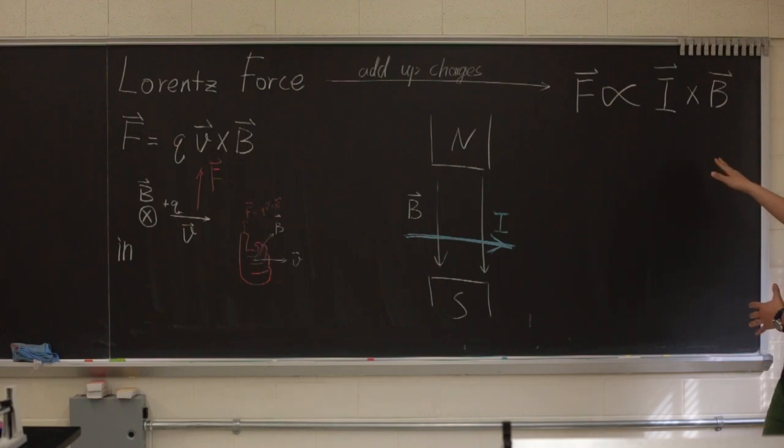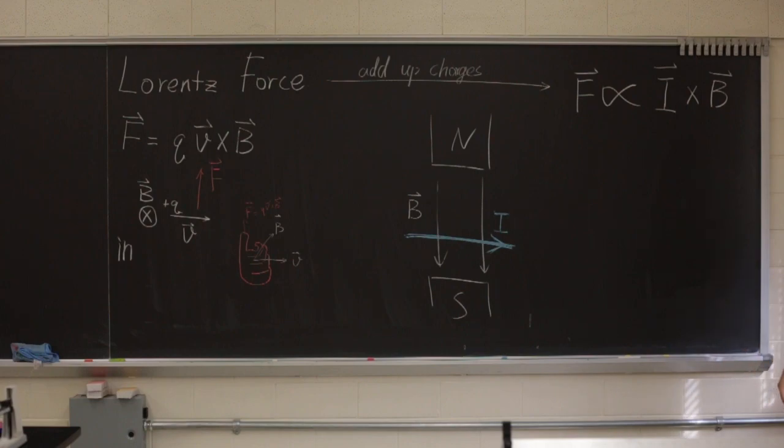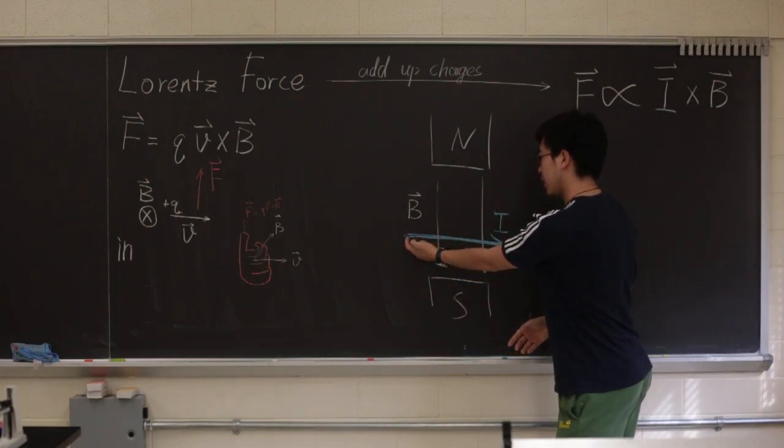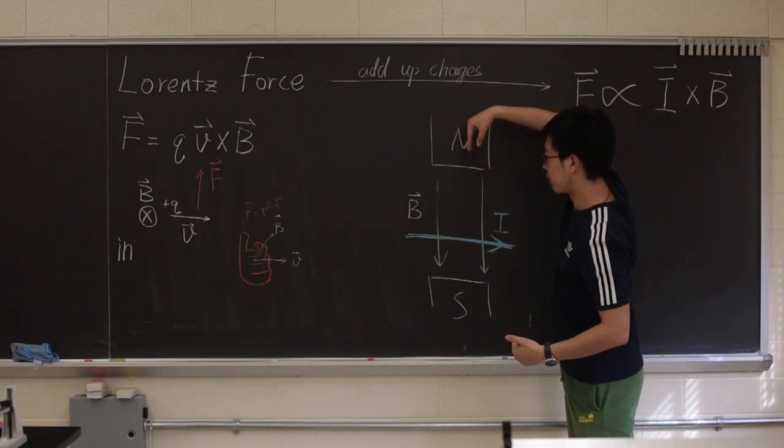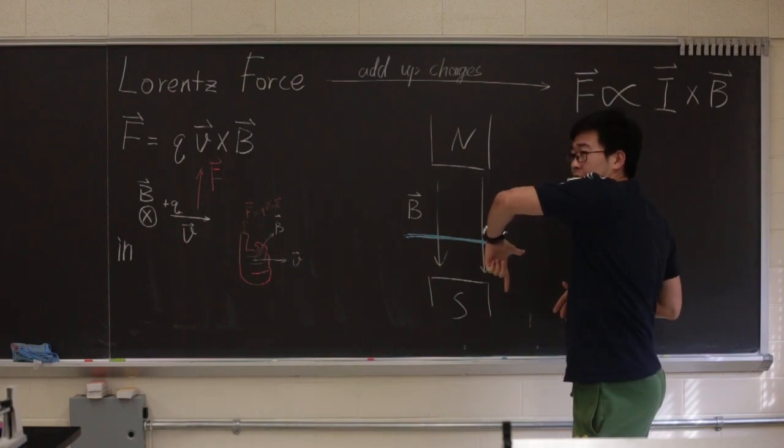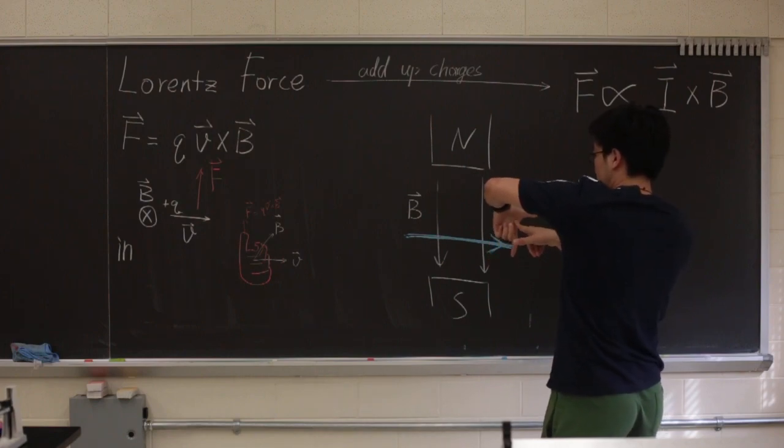A force is proportional to the direction of the current across the magnetic field. So say if we have a current flowing from left to right and a magnetic field going from up to down. So try to do the same thing as I did.